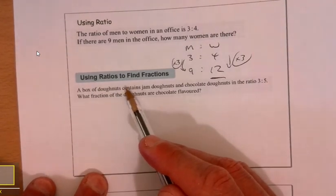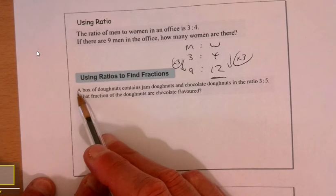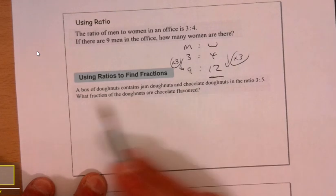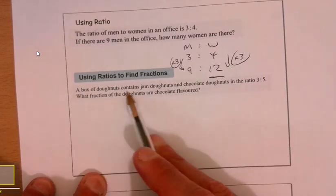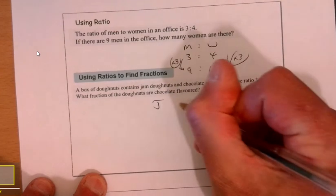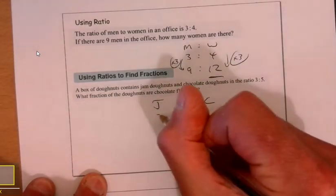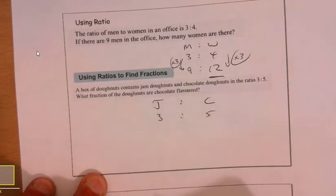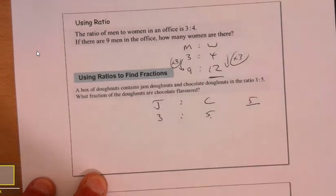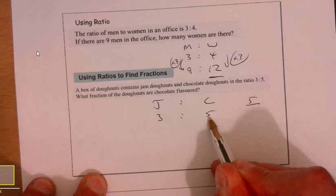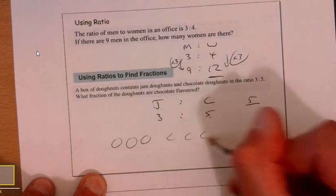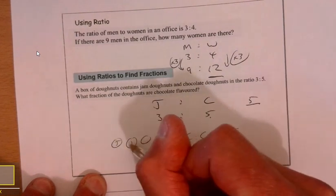Using ratios to find fractions. A box of donuts contains jam donuts and chocolate donuts in a ratio of three to five. What fraction of the donuts are chocolate? Five out of how many are there all together? There's five parts of chocolate. If I had one, two, three jammy ones and then five chocolate ones, it's five over eight. There you go.